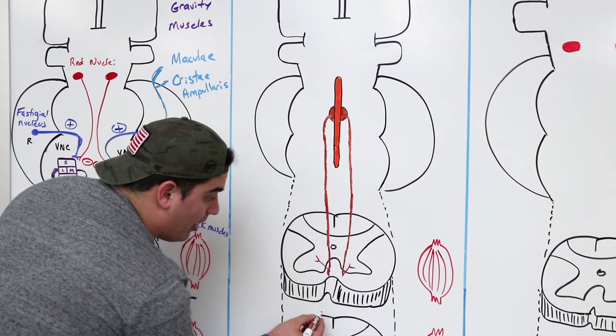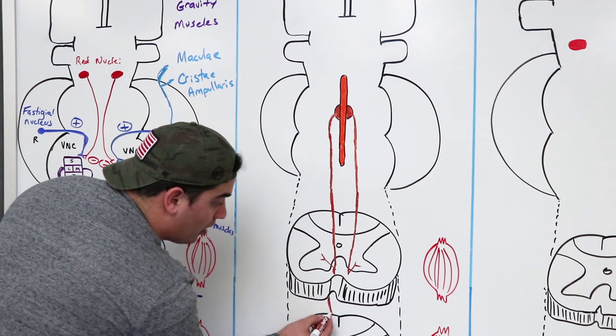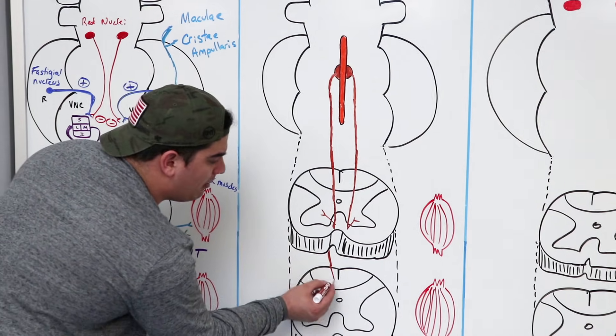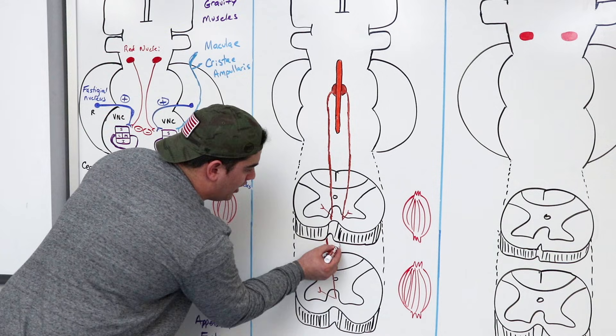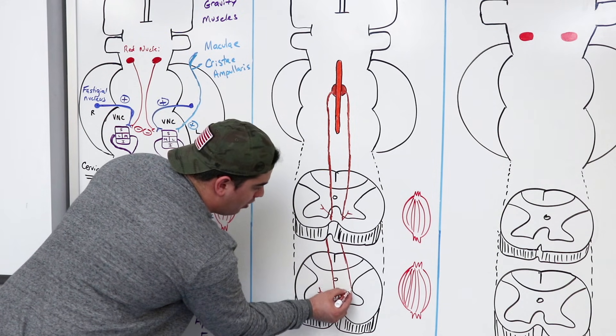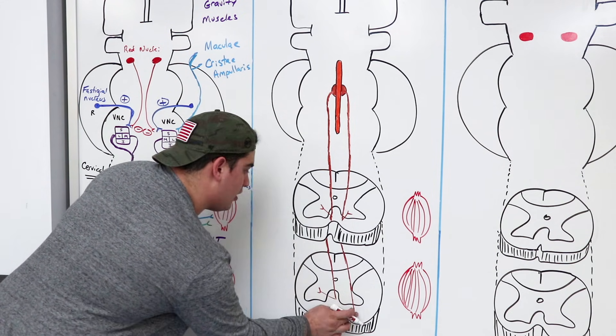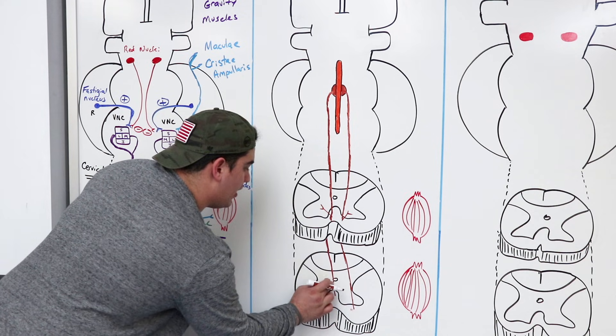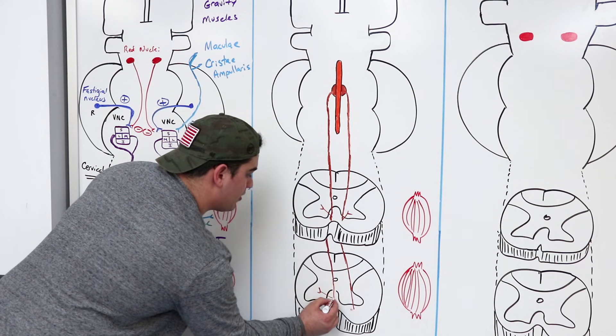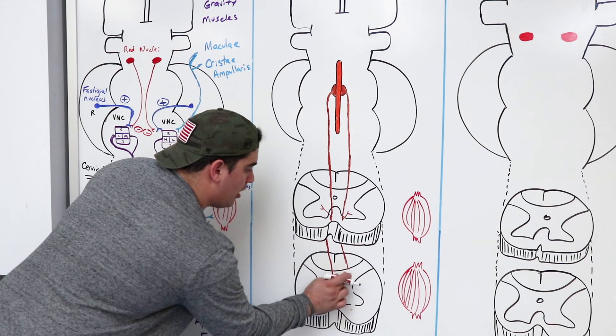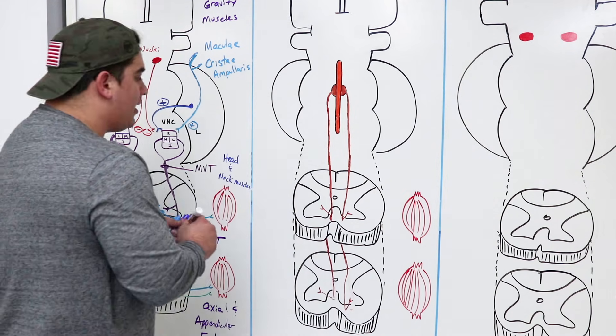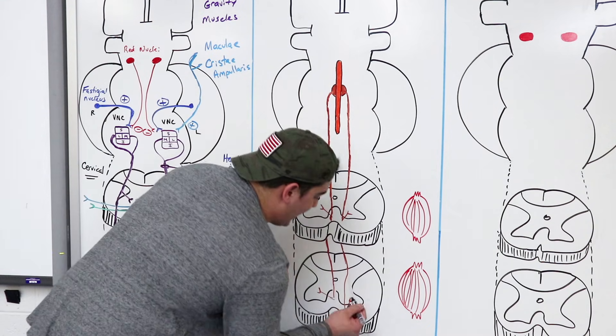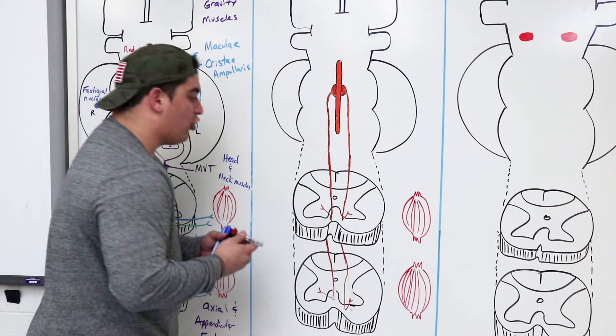Then from here, it can continue. Maybe it wants to go down a couple more spinal cord levels, because it can supply many different types of spinal cord levels. So it's going to be able to supply this anterior or this ventral gray horn.